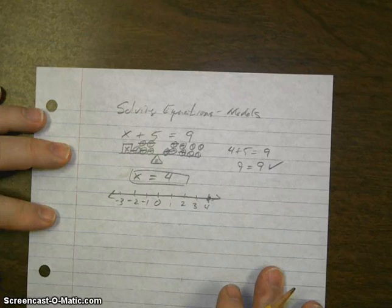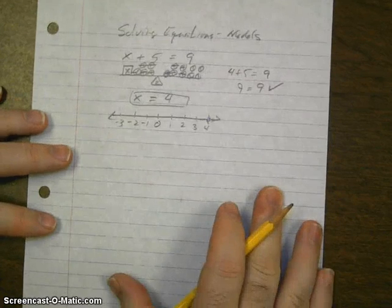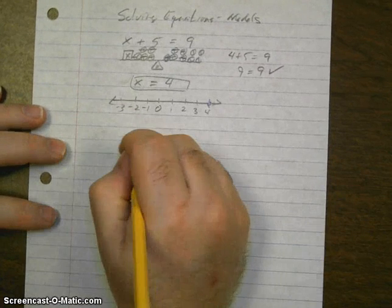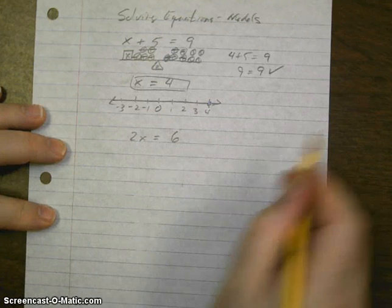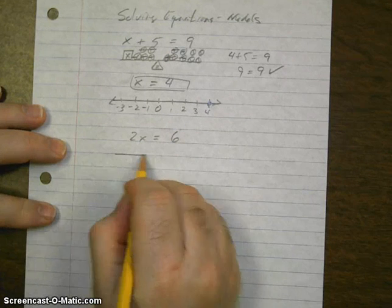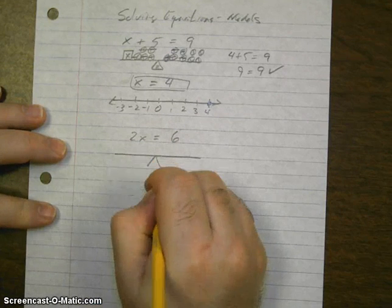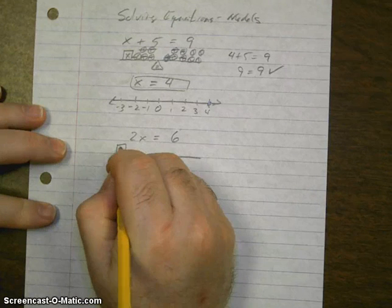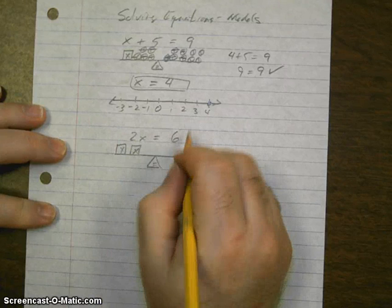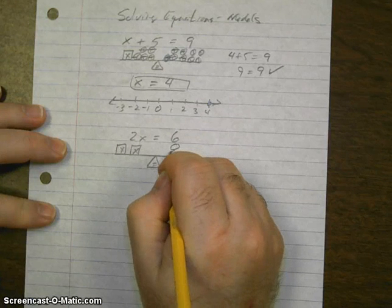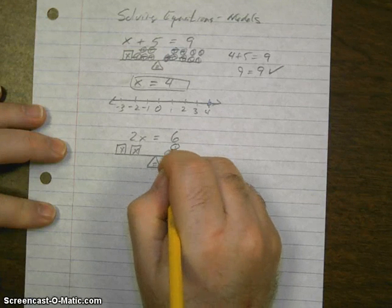One more example. 2x equals 6. On the left side, we have 2 x's. On the right side, 6 ones.